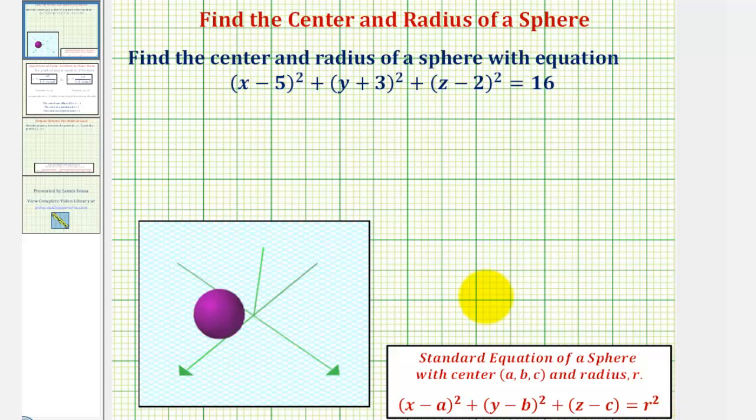So looking at our equation, since we have the quantity x minus five squared, a, or the x-coordinate, would be positive five. Because we have the quantity y plus three squared, b, or the y-coordinate, would be negative three. Notice here, if we had y minus negative three, that would simplify to y plus three. And then because we have the quantity z minus two squared, c, or the z-coordinate, is positive two.